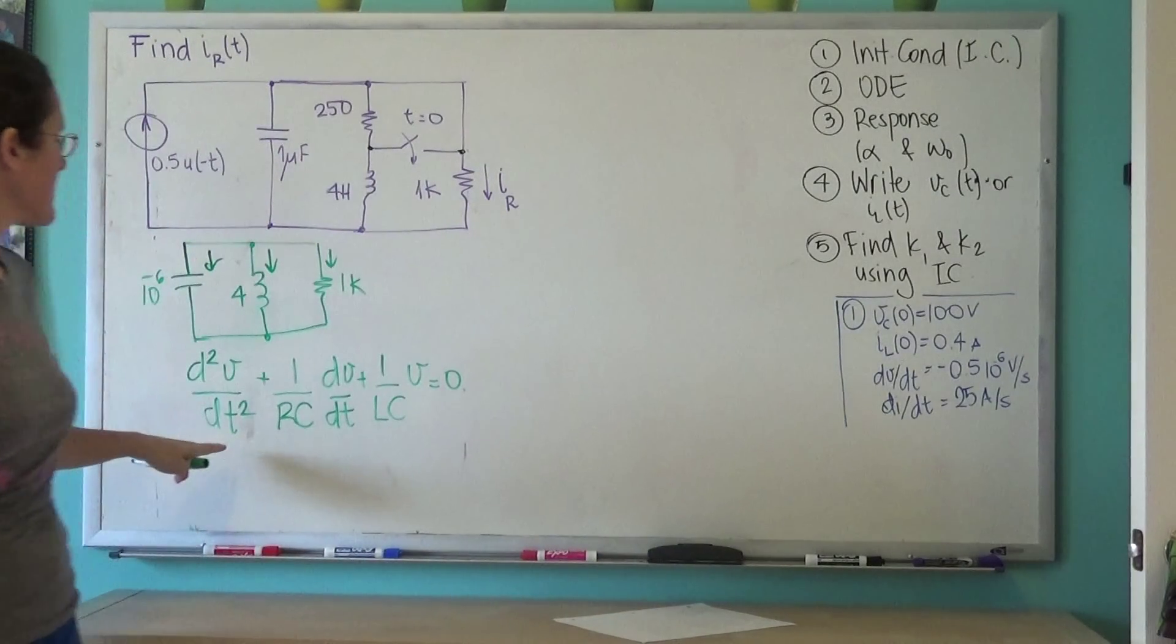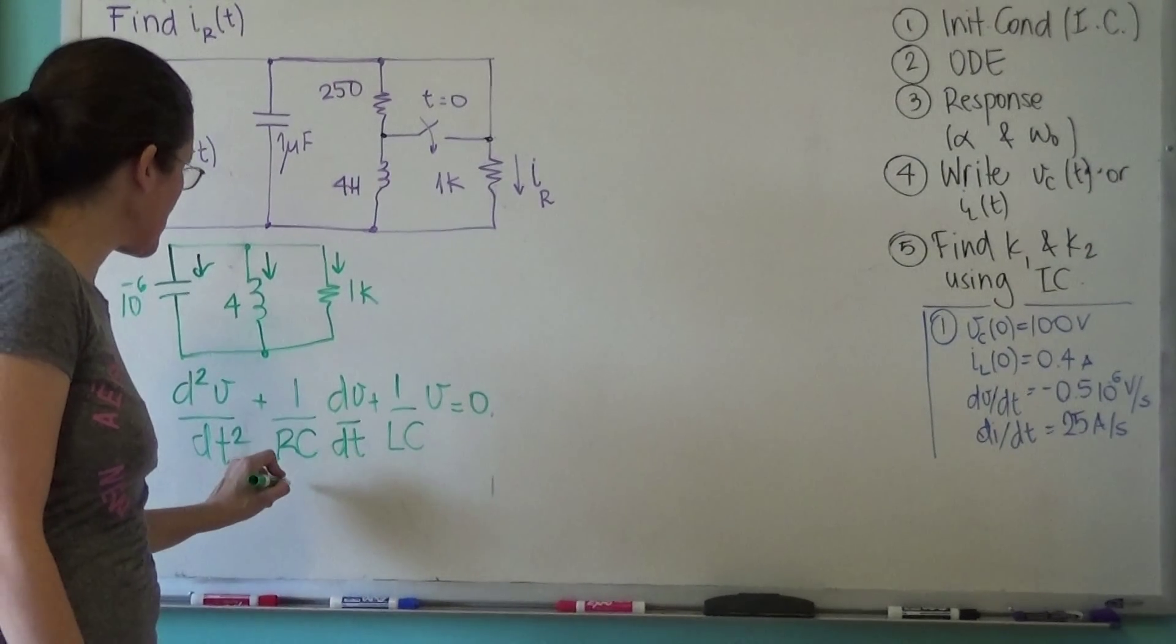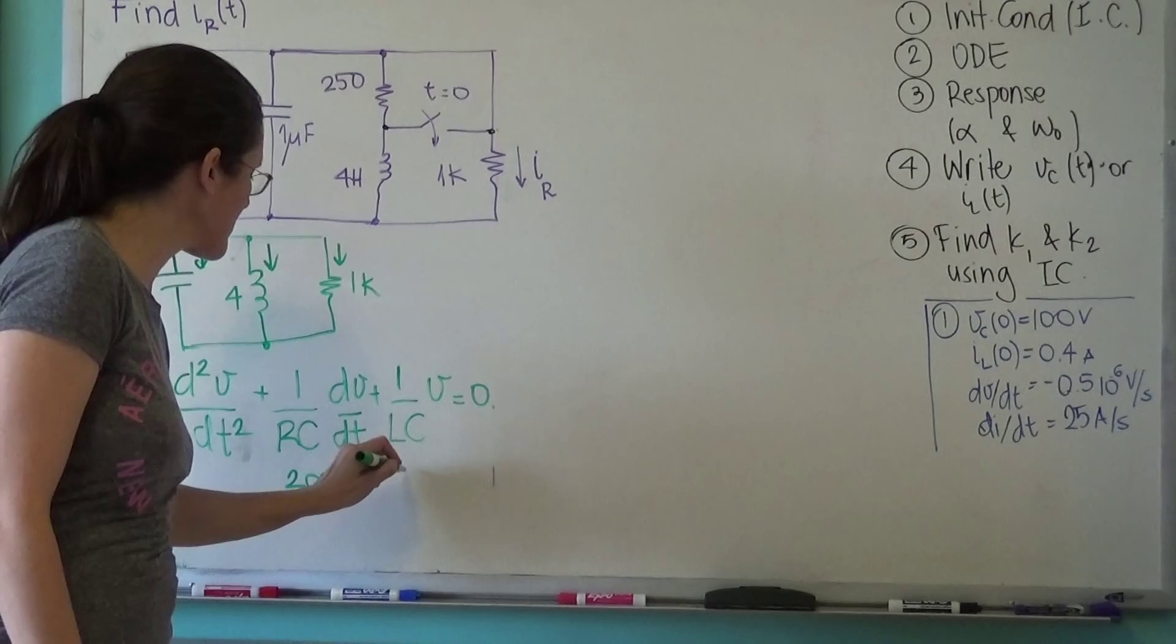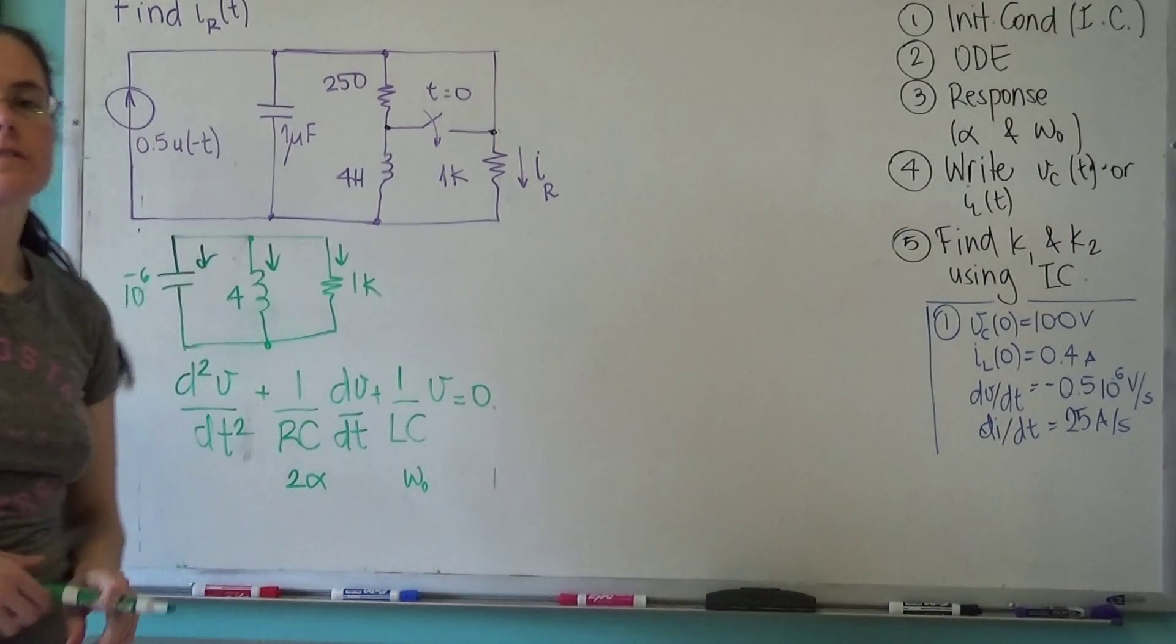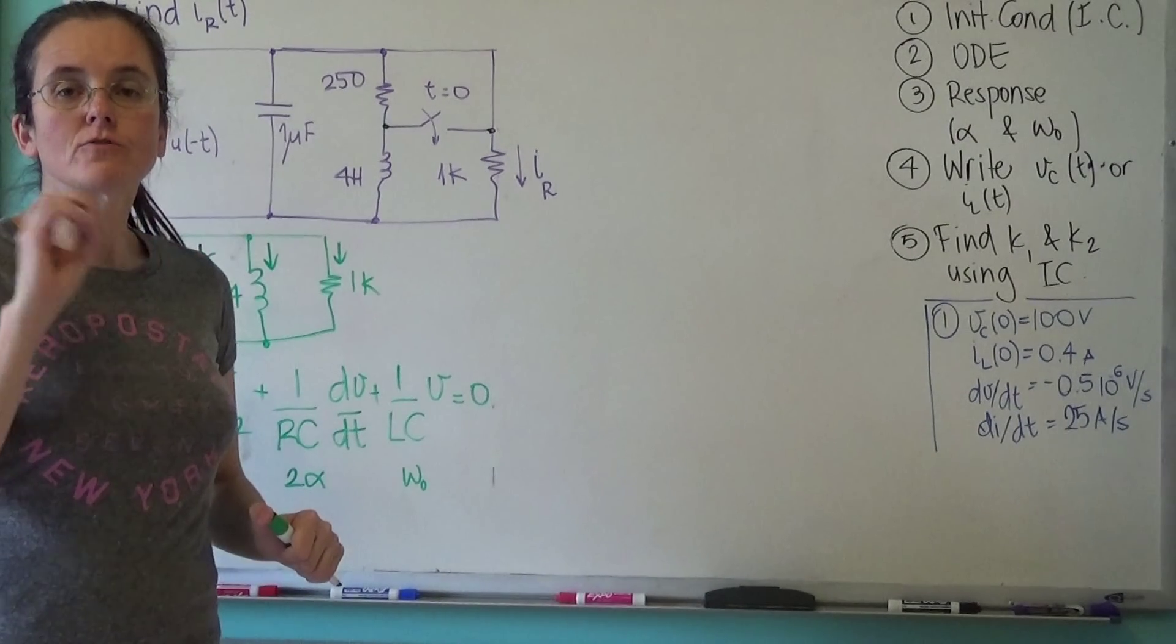The differential equation that describes this circuit is something like this. And it's basically the sum of all currents equal to zero. But what's important here is the two alpha is this, and the omega naught is this. And the one over RC and one over LC give us the damping factor and the resonant frequency.